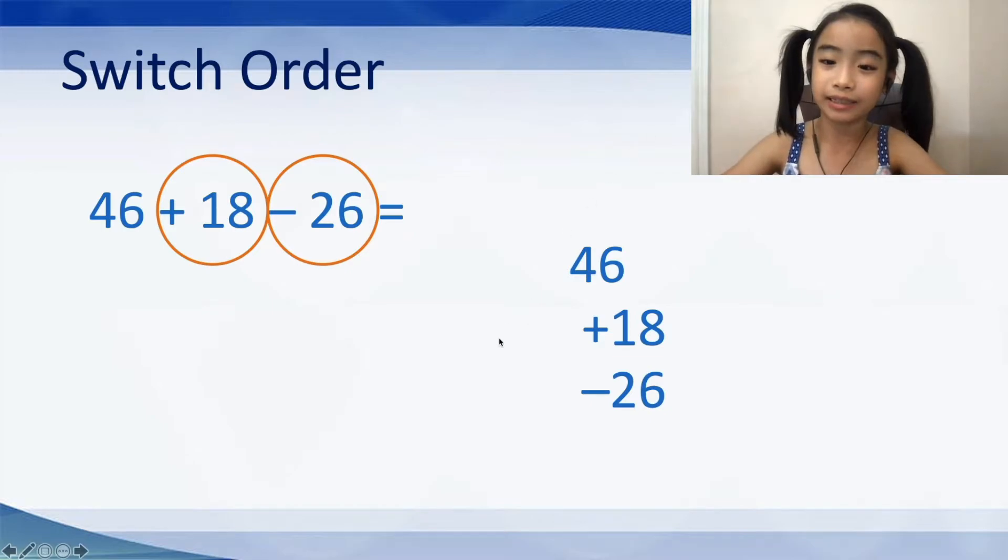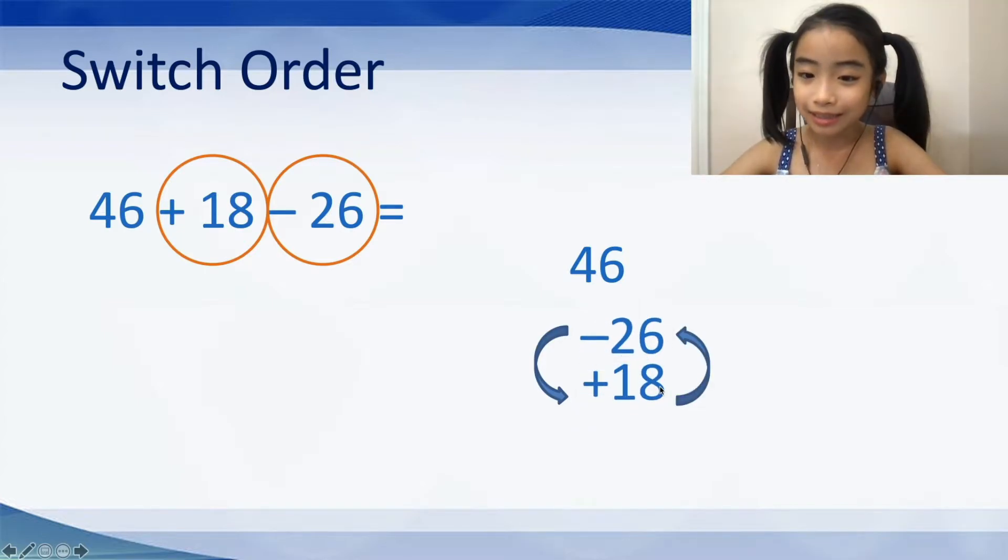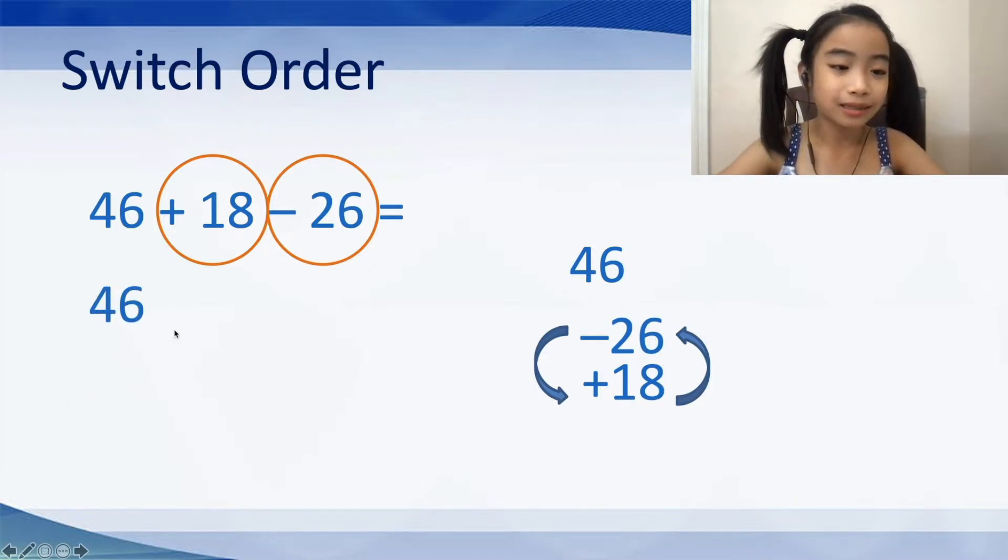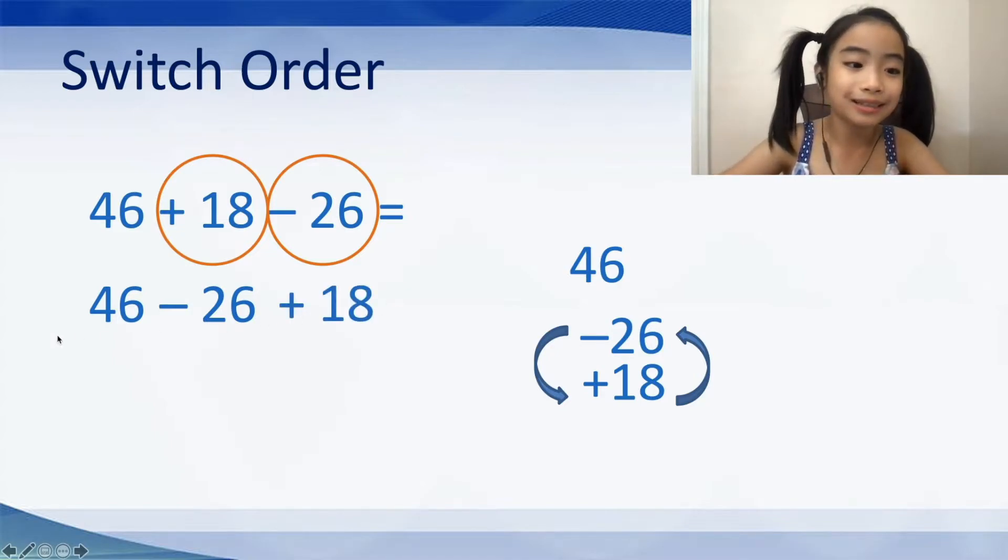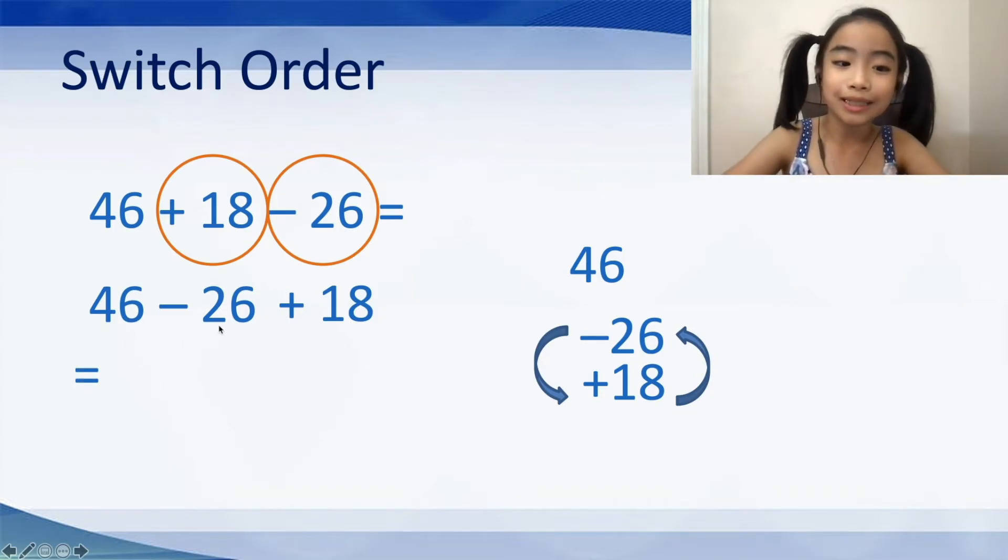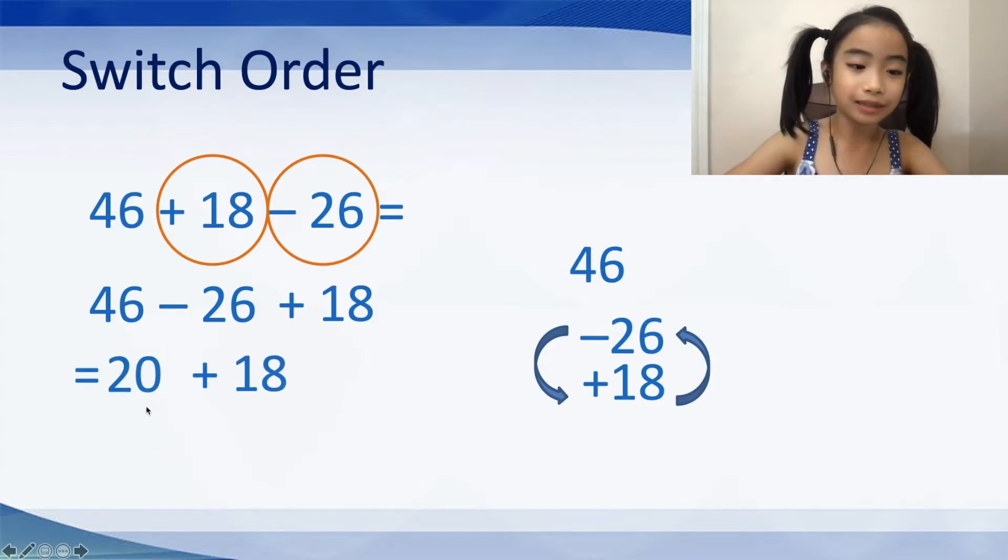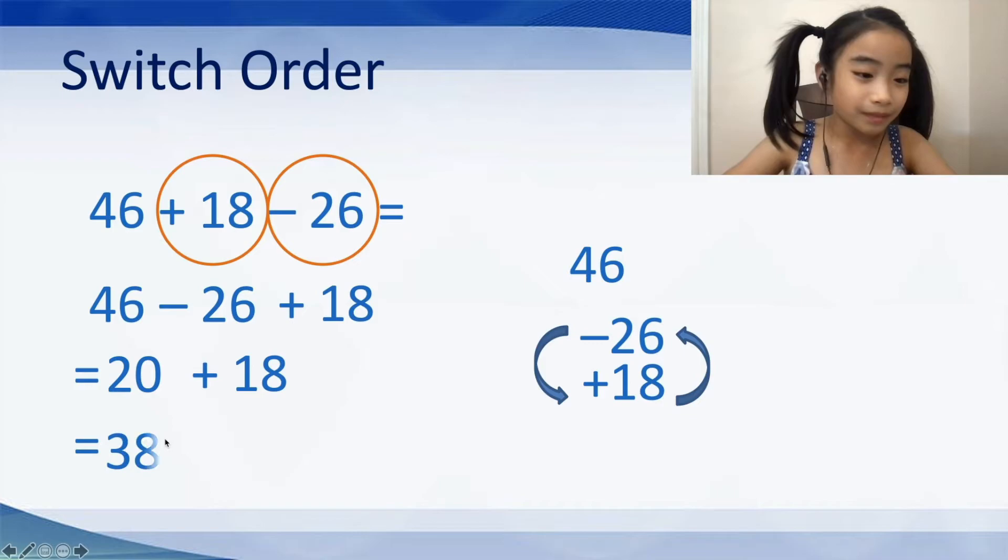So, now, we can switch the order of this equation because we have the sign with the number that is behind it. So, it won't change. So, let's see. If we switch plus 18 and minus 26 like this. First, we have 46 minus 26 plus 18. So, now, this is much easier because we have 46 minus 26. It's easy. Just do it in your head. It's 20, and plus 18 equals 38.